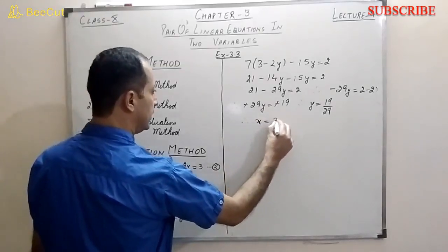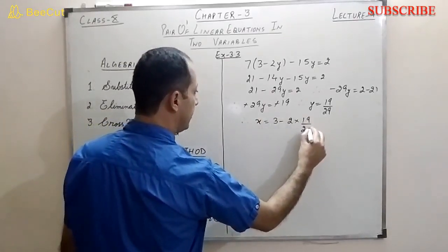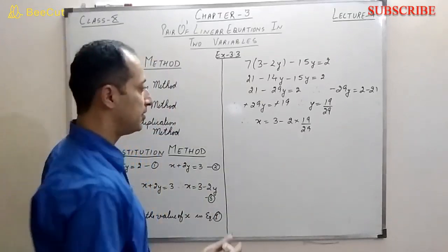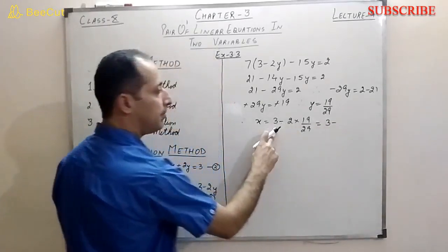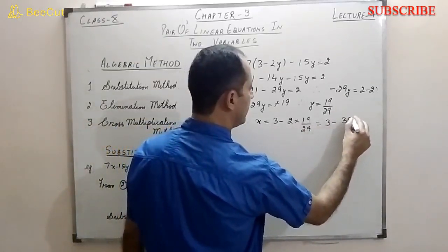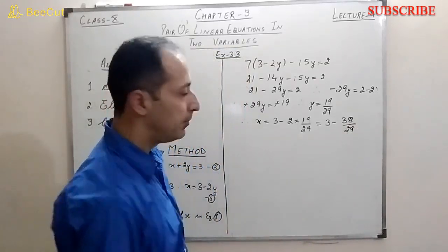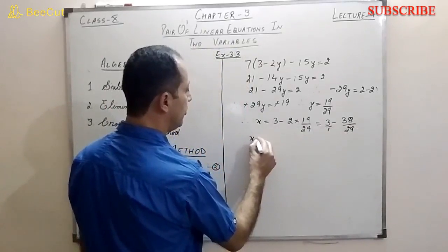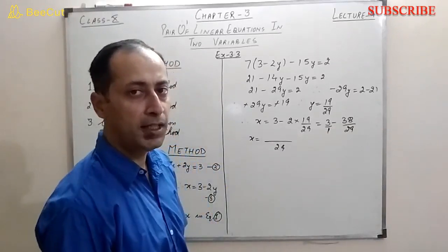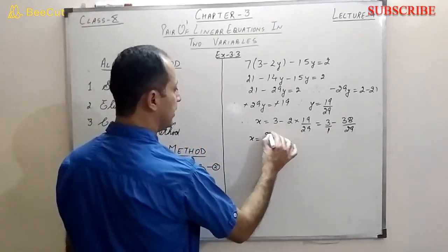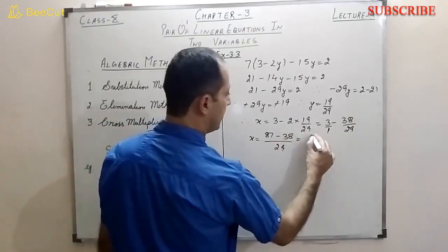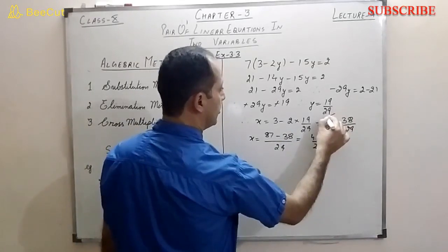So x equals 3 minus 2 times (19 by 29). Do these calculations carefully. First, multiplication: 2 into 19 is 38, giving x equals 3 minus 38 upon 29. Taking LCM as 29: (29 times 3) minus 38 upon 29, which is 87 minus 38 upon 29. Subtracting gives x equals 49 by 29.